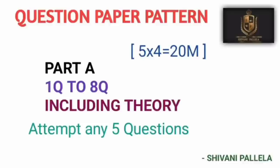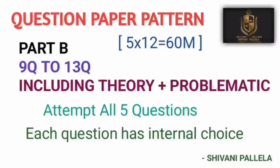Business Statistics is a combined subject — both theory and problematic. For four-mark theory questions, you need to write one and a half sides of paper. In Part B, questions 9 to 13 will have both a theory question and a problematic question. You need to attempt five questions and each question will have internal choice. This is the complete question paper pattern you need to understand before starting your preparation.